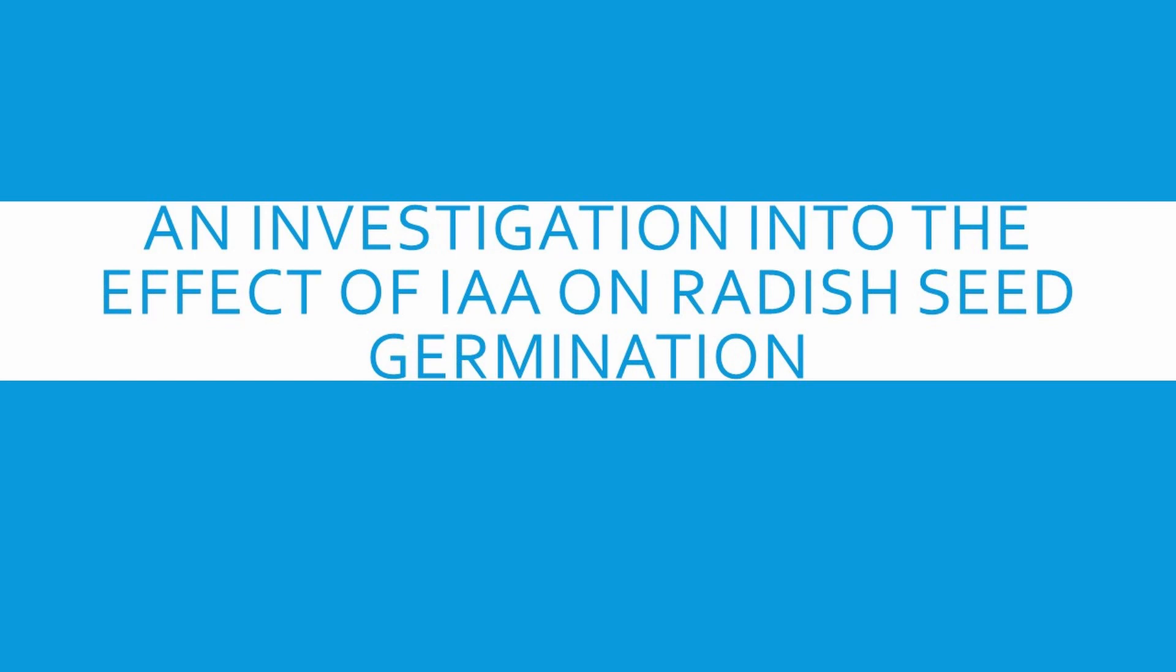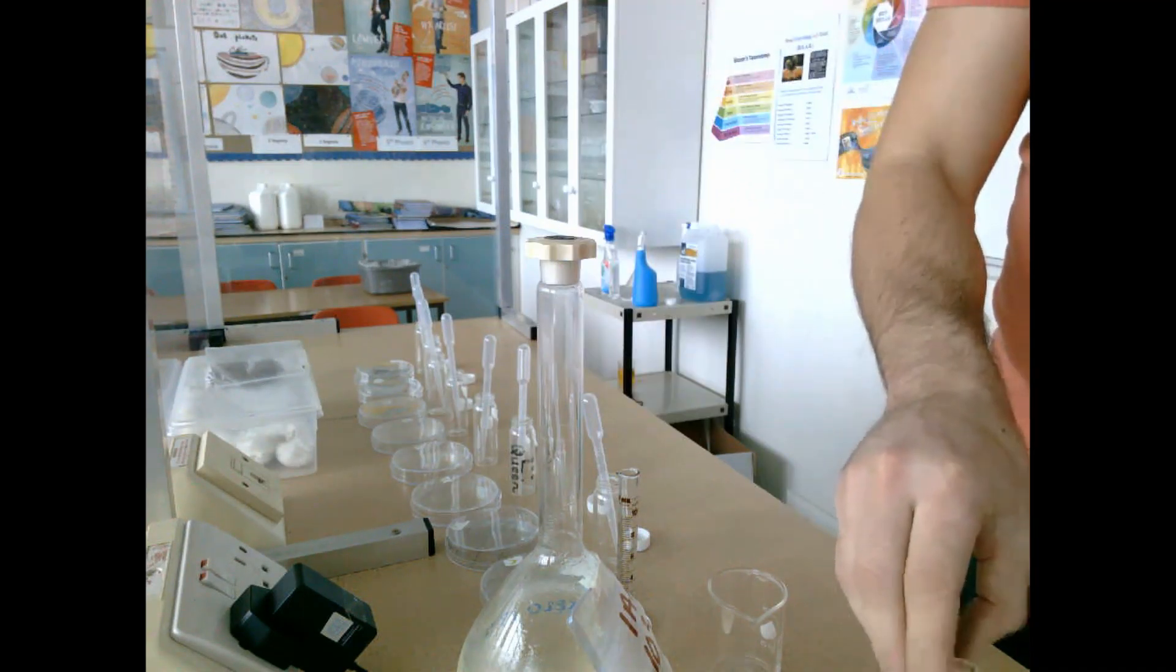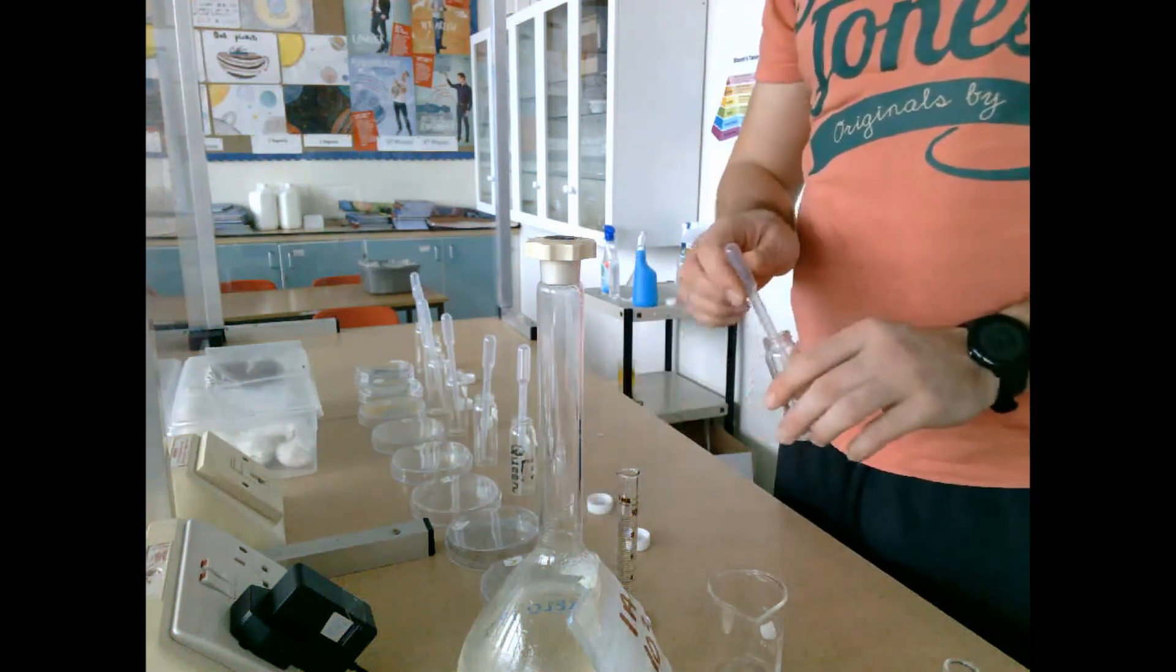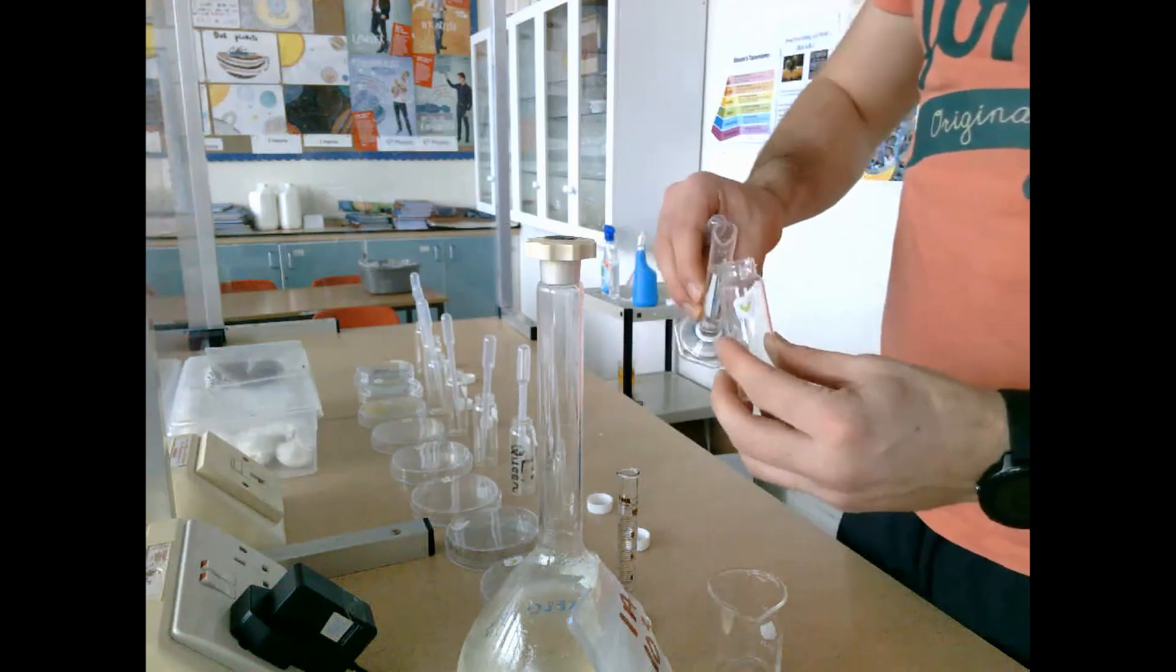We take a graduated cylinder and measure out nine milliliters of water. This nine milliliters of water is then going to be added into glass jar number one.